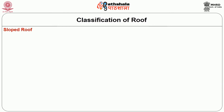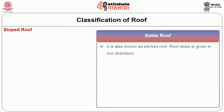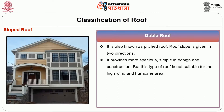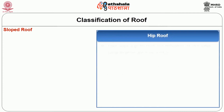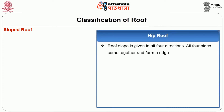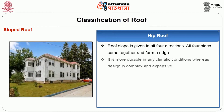Next is the sloped roof. The first type is the gable roof, also known as a pitched roof, in which the roof slope is given in two directions. It provides more spacious area and is simple in design and construction, but this type of roof is not suitable for high wind and hurricane areas. Next is the hip roof, in which the roof slope is given in all four directions. All four sides come together to form a ridge. It is more durable in any climatic conditions, whereas the design is complex and expensive.